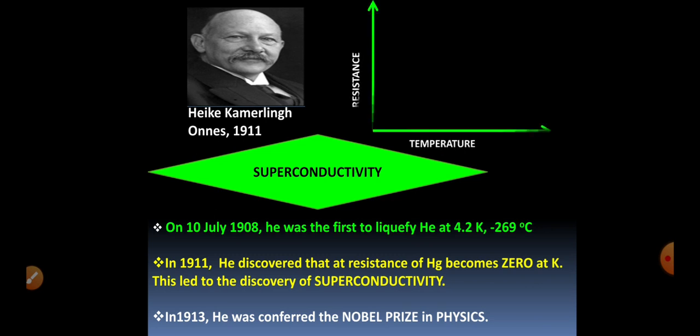He observed that the resistance of mercury decreases with decrease in temperature, and this resistance becomes zero at 4.2 Kelvin. In other words, at 4.2 Kelvin, mercury does not exhibit any kind of resistance. At this particular state, mercury is no longer a conventional conductor but becomes a superconductor. The temperature at which resistance becomes zero, or the material becomes superconducting, is called the critical temperature. In the case of mercury, the critical temperature is 4.2 Kelvin.